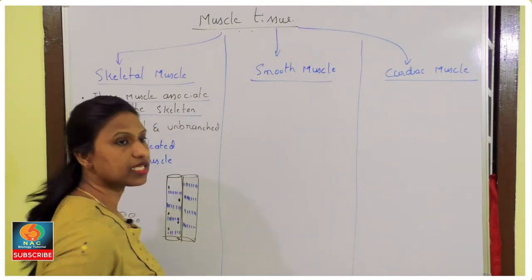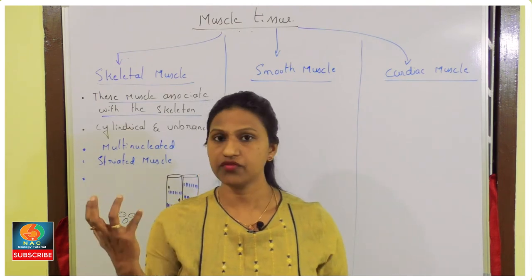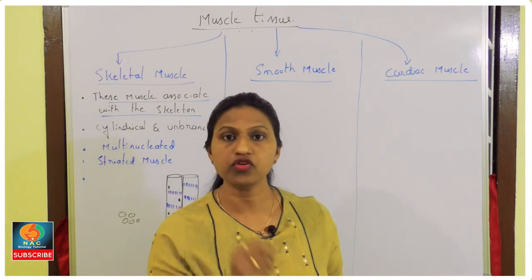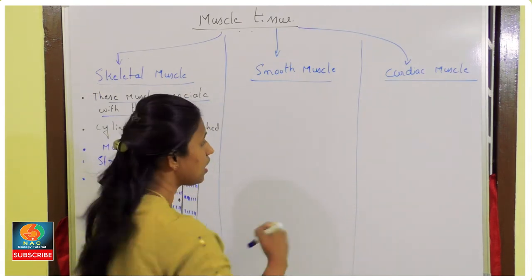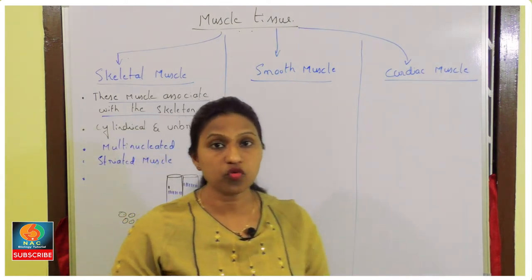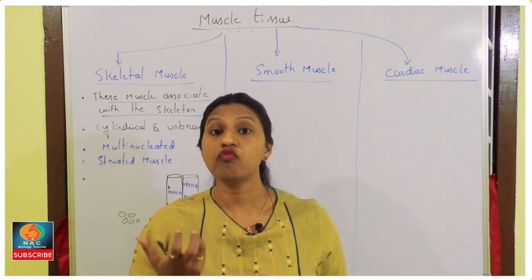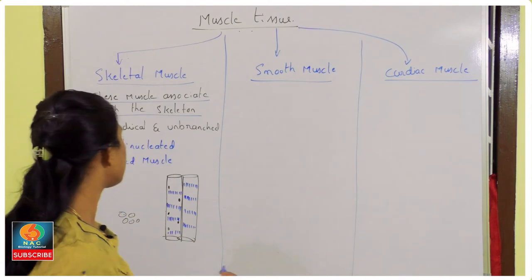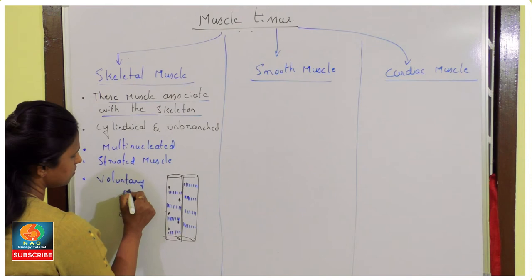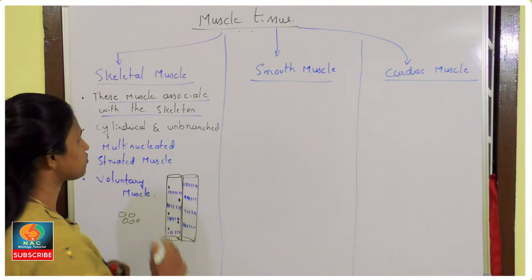Skeletal muscles are associated with the skeleton, and their movement is under our control — we can move our hands or write whenever we choose. Because of this voluntary control, they are called voluntary muscles.